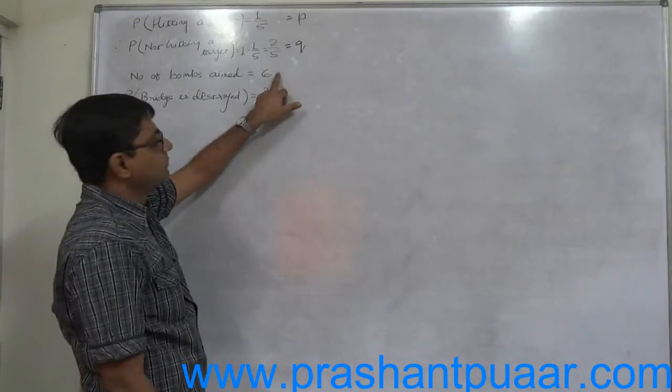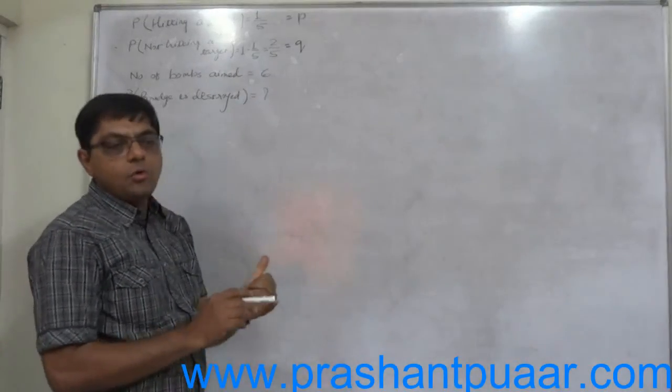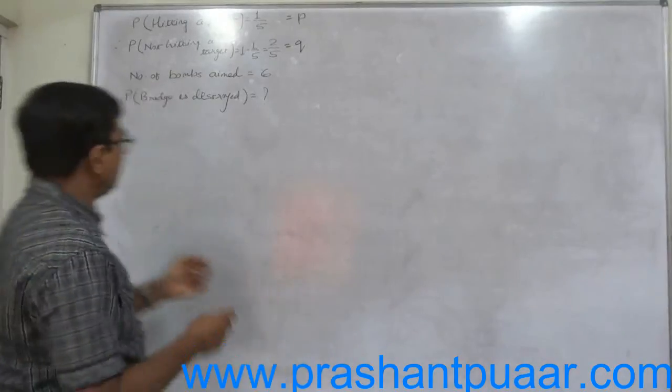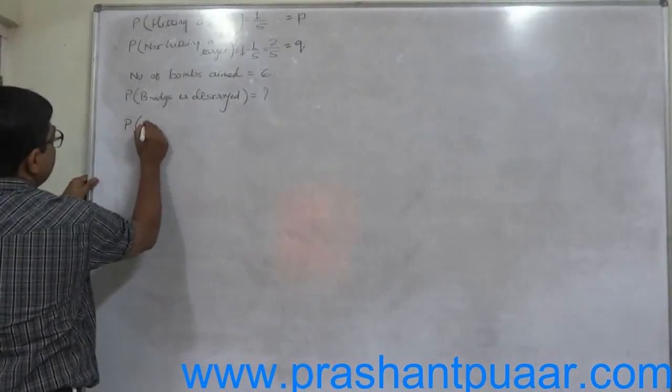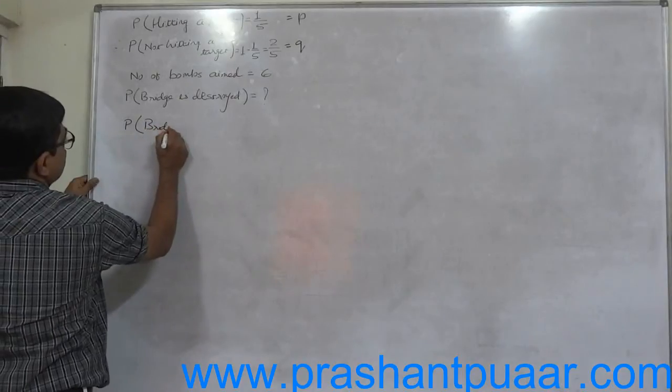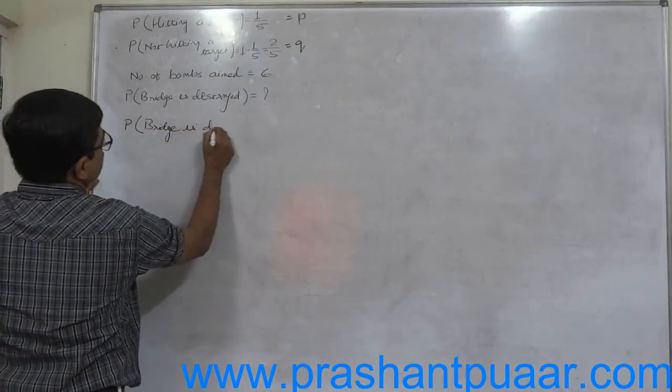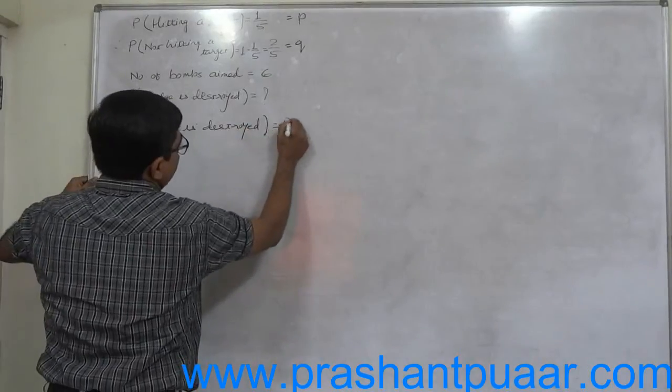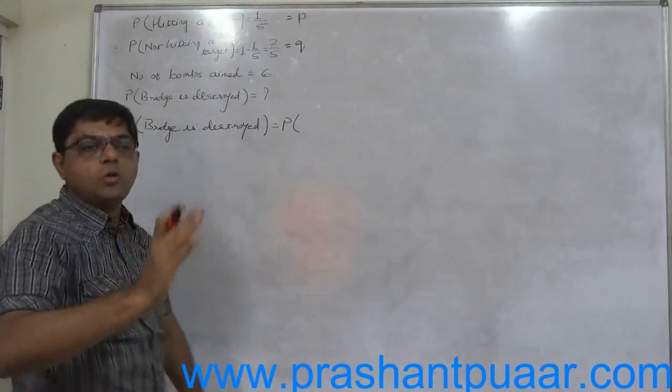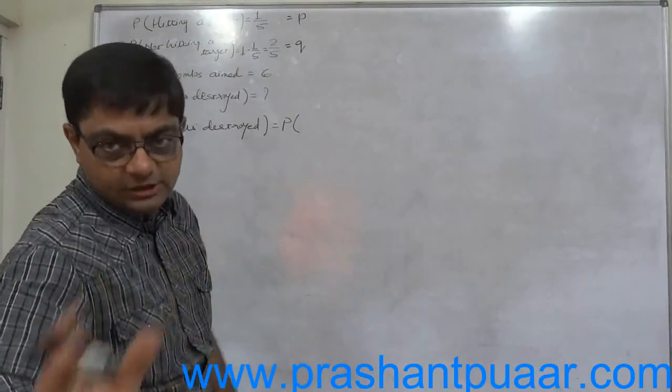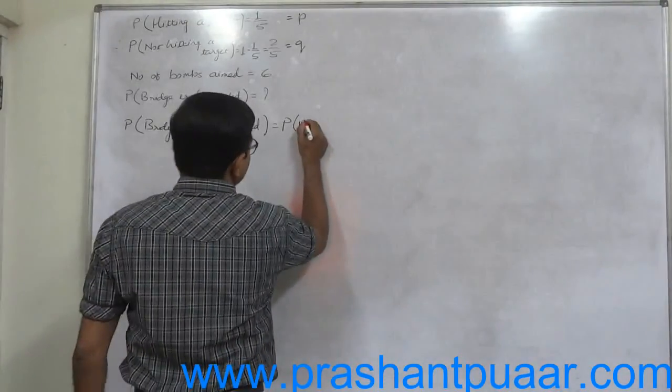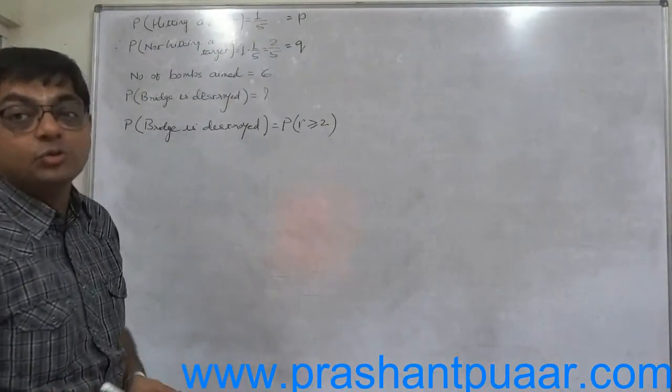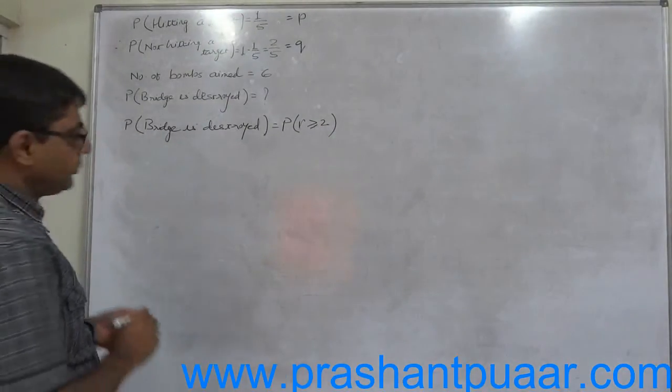So if out of six bombs, two or more are on the bridge, the bridge is destroyed. So the probability that the bridge is destroyed means probability that two or more bombs are successfully aimed at the bridge. So R should be greater than or equal to 2. This is the case of at least two bombs are successfully aimed.